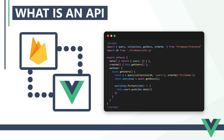At its most basic, an API is simply a way to interact, or communicate, with an application. For example, if you're integrating Firebase into your app, you're using its API to interact with it.